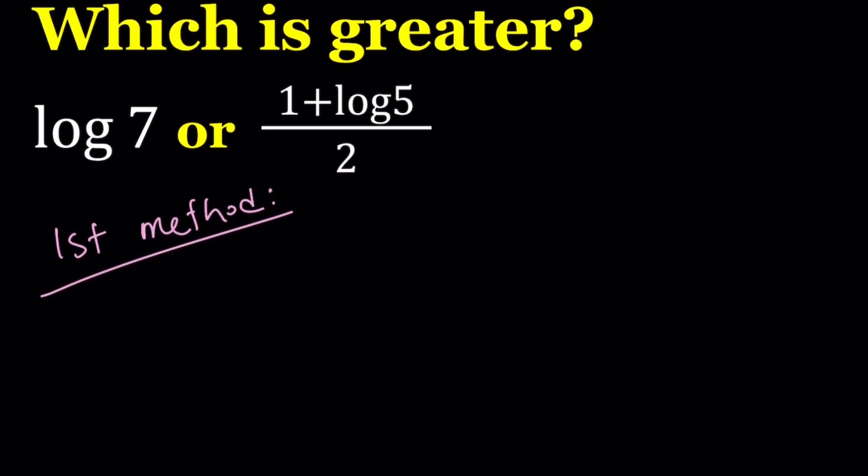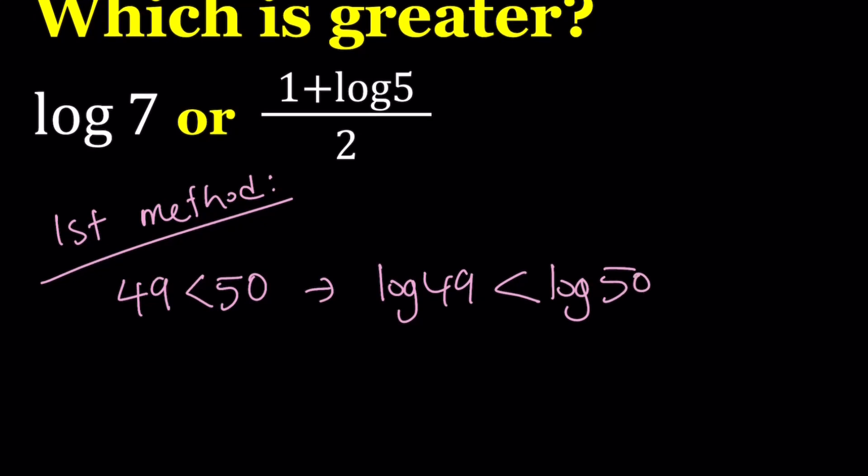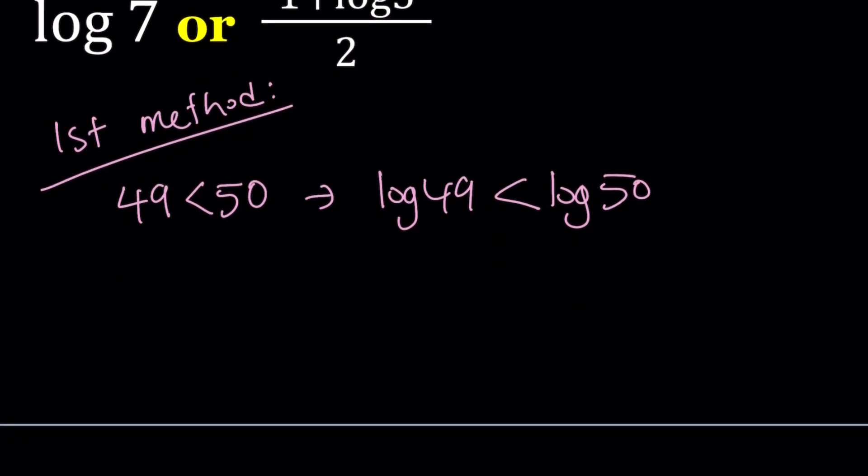So the first method looks like follows. Start off with 49 and 50 first. 49 is less than 50. Would you agree? And then log 49 is definitely less than log 50 because log is an increasing function and it's just going to follow.